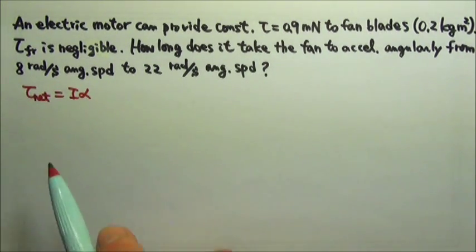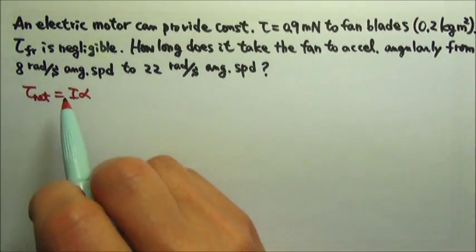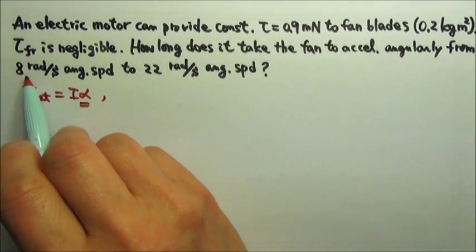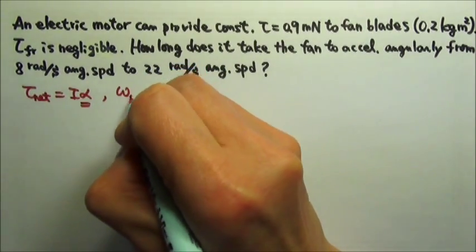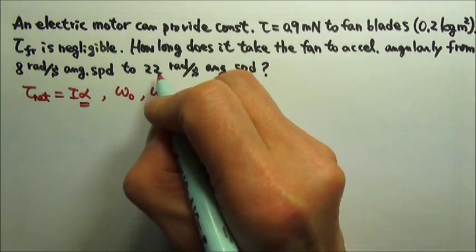For this problem, we can first use the net torque equals to I alpha. We have the torque, we have the I, so we can find the alpha, the angular acceleration, and we also have the initial angular velocity and the final angular velocity.